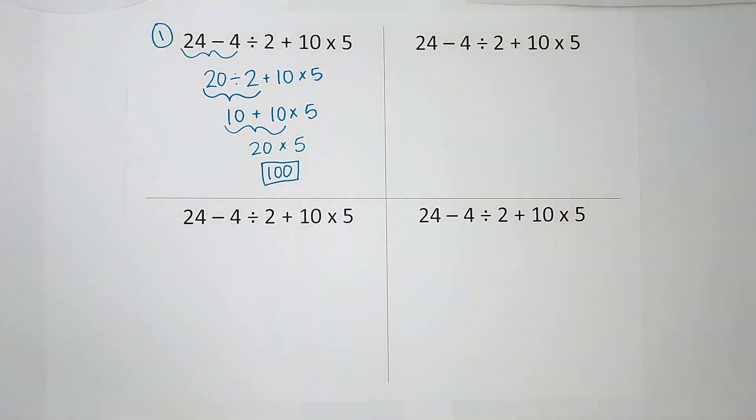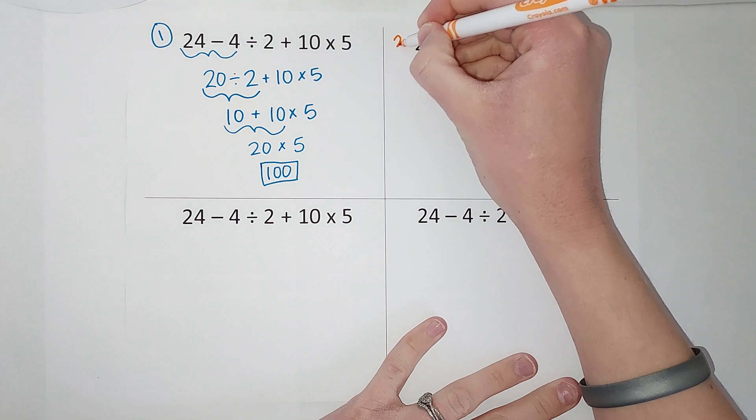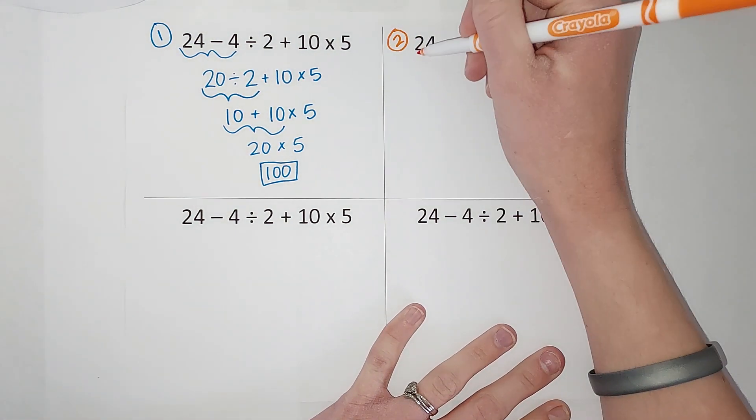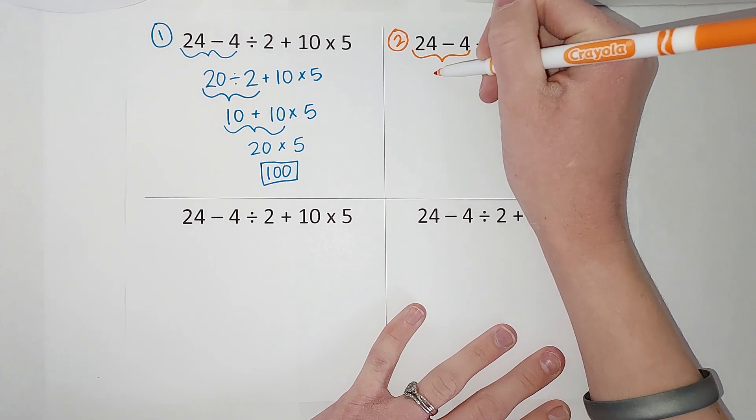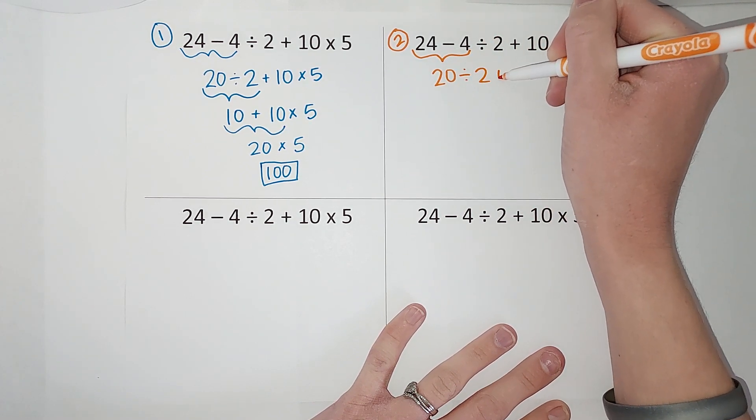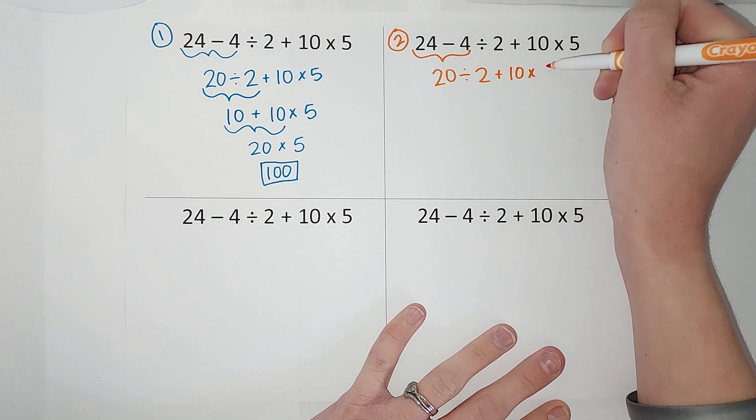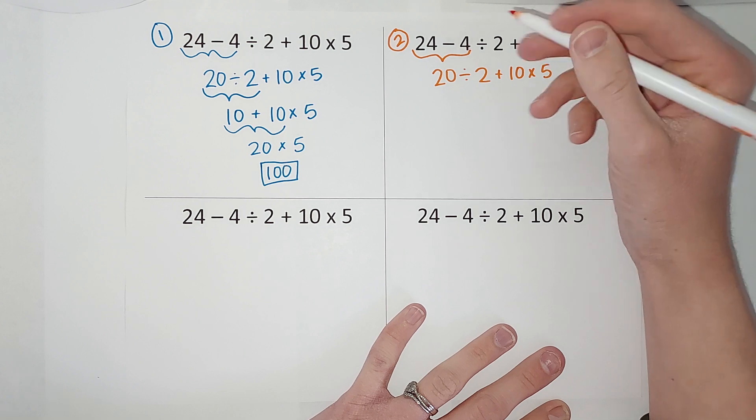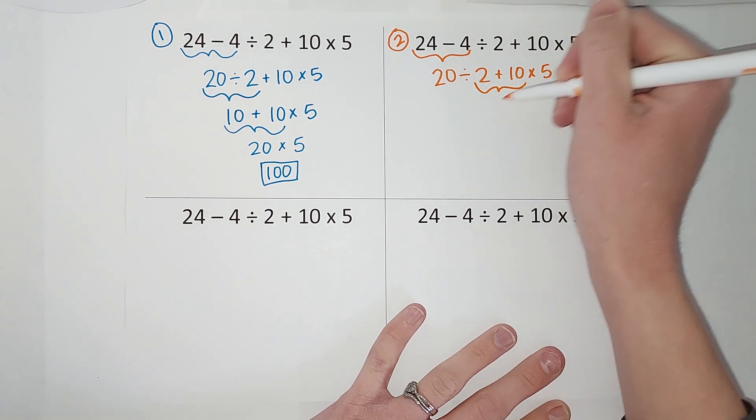She says, okay, I see what you did there. Then the second kid comes up and she says, okay, show me how you got your answer. He says, well, I subtracted first, got 20 divided by 2 plus 10 times 5.